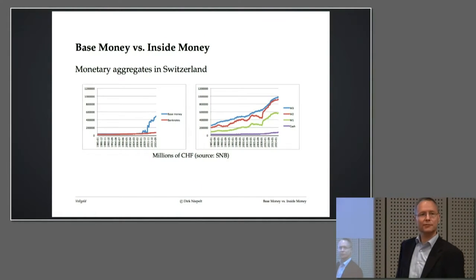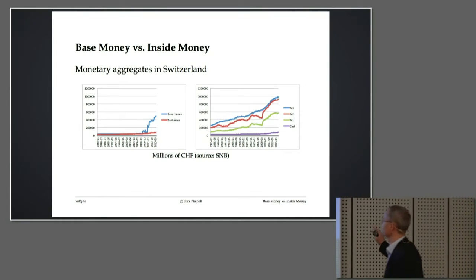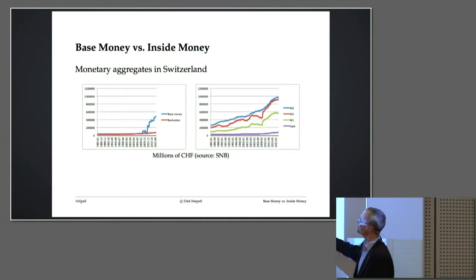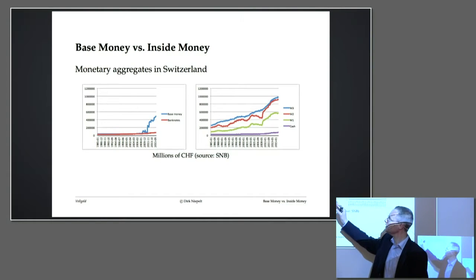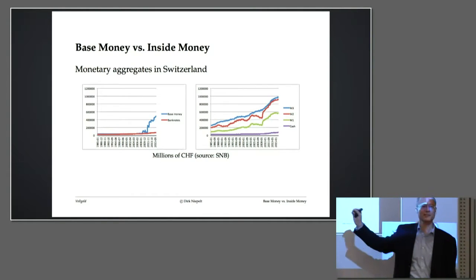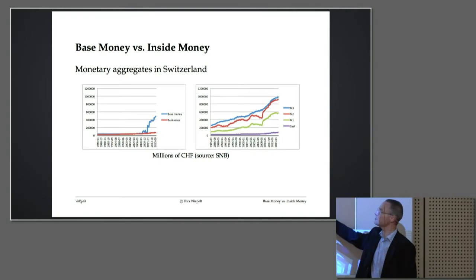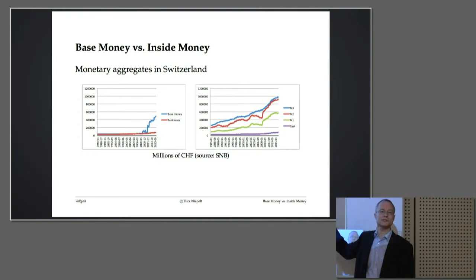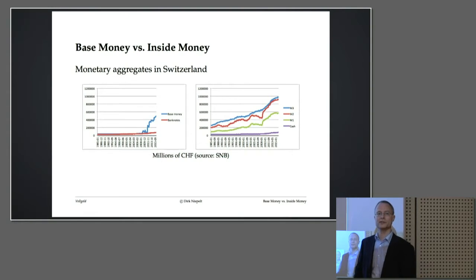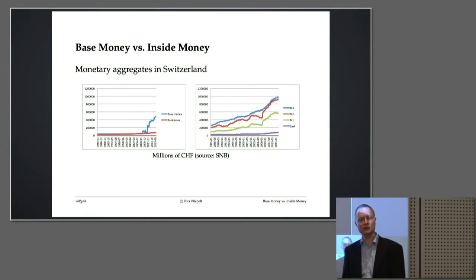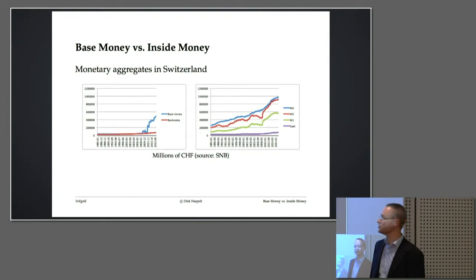Let me start with a brief look at the data. What you should see on the left-hand side here is money that is issued, created by the Swiss National Bank, by the Central Bank. What you see on the right-hand side is money that we use, we as the general public. These two things are different, and that's really the starting observation for the Vollgeld Initiative.